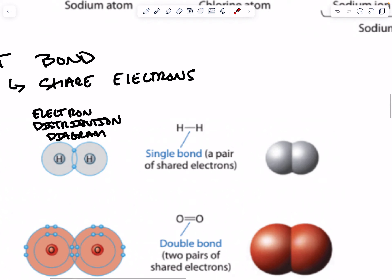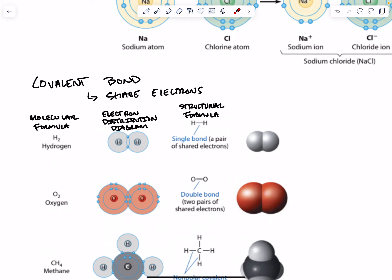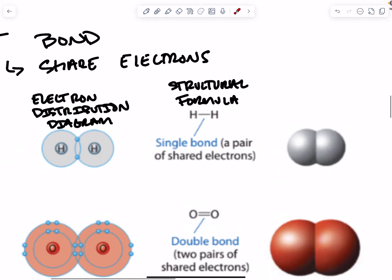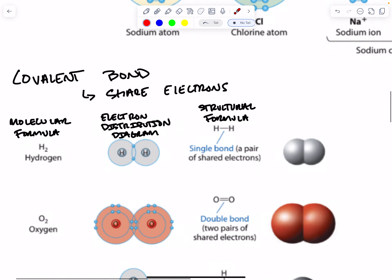The next schematic is our structural formula. It's showing us how the structures are paired together, but maybe a little less information than the electron distribution diagram — it's not showing us exactly how the electrons are held in place. We're seeing the two shared electrons represented as just a line, and this line actually represents a pair of shared electrons.